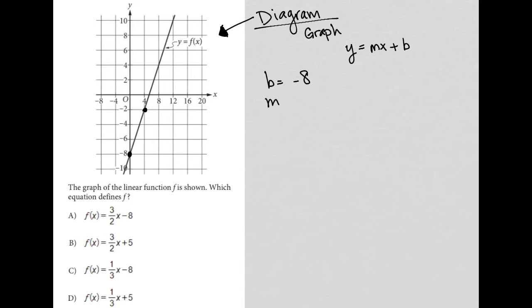It looks like to get from here to this next point, I'm going up 6 units, right, from negative 8 to negative 2. So that's a positive 6. And I'm going to the right 4 units, right, from 0 to 4. So that's a positive 4. So my slope is equal to 6 over 4, which reduces to 3 over 2.